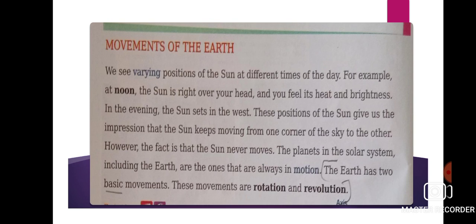Next, moments of the Earth. We see the varying position of the sun at different times of the day. For example, at noon the sun is right over your head and you feel its heat and brightness. In the evening, the sun sets in the west. The position of the sun gives us the impression that the sun keeps moving from one corner of the sky to the other. However, the fact is that the sun never moves. The planets in the solar system, including the Earth, are the ones that are always in motion. The Earth has two basic movements: rotation and revolution.